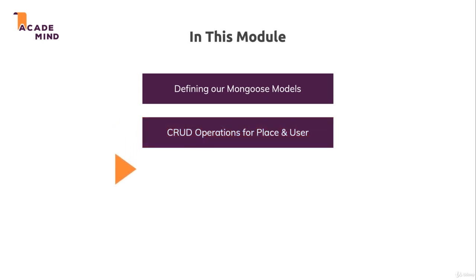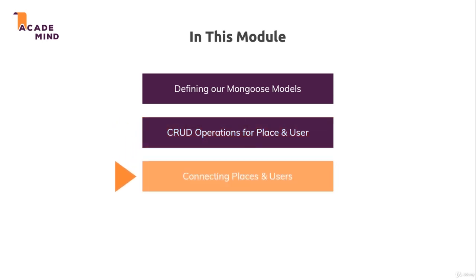Finally, we'll also have a look at the relation between places and users. We will establish a connection between these two, because if we, for example, create a new place, then this place should be allocated to a specific user. This logic is missing so far, therefore it's time to implement it. And with that, let's dive into this module.